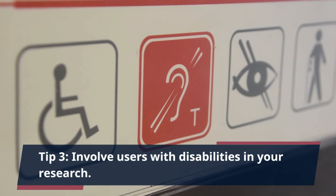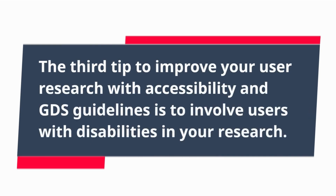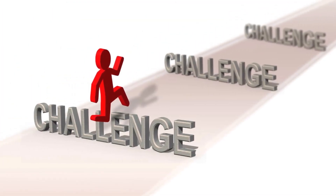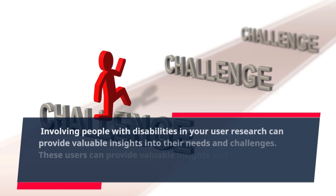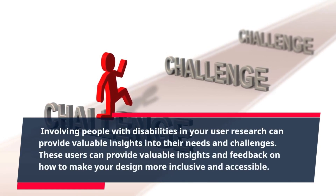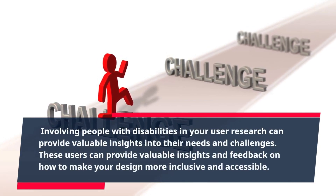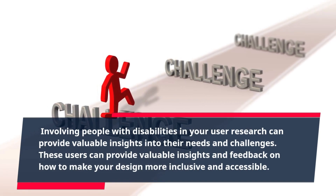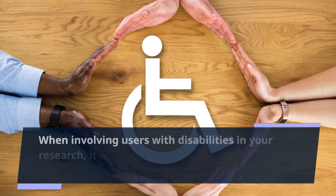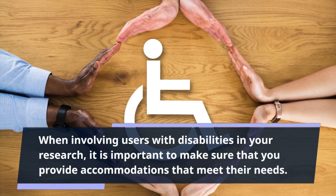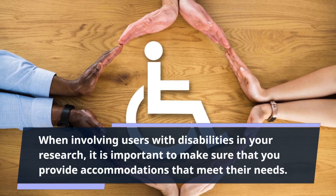Tip 3: Involve Users with Disabilities in Your Research. The third tip is to involve users with disabilities in your research. Involving people with disabilities in your user research can provide valuable insights into their needs and challenges. These users can provide valuable feedback on how to make your design more inclusive and accessible. When involving users with disabilities in your research, it is important to make sure that you provide accommodations that meet their needs.